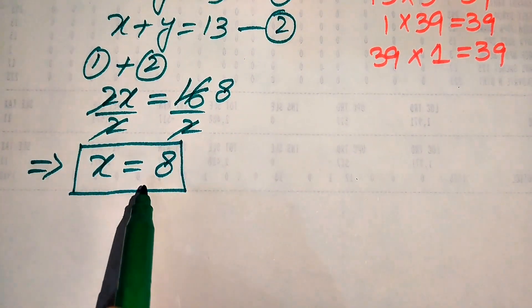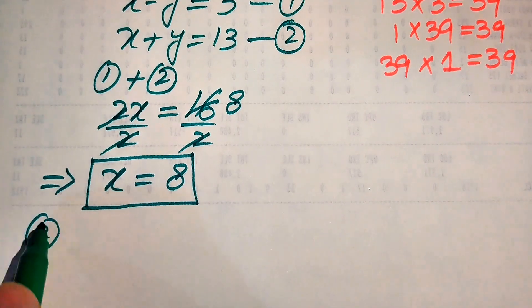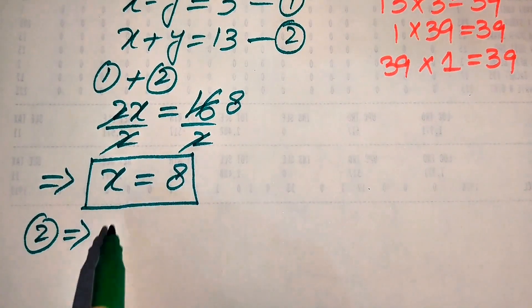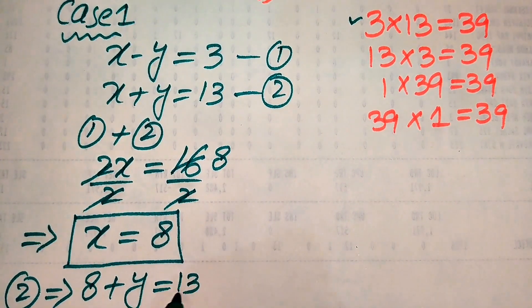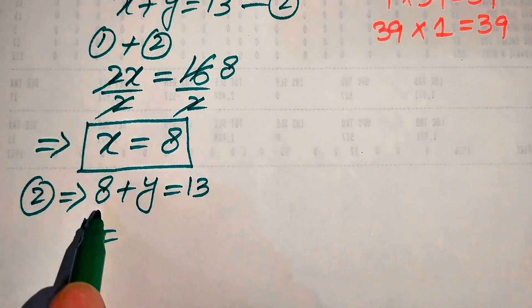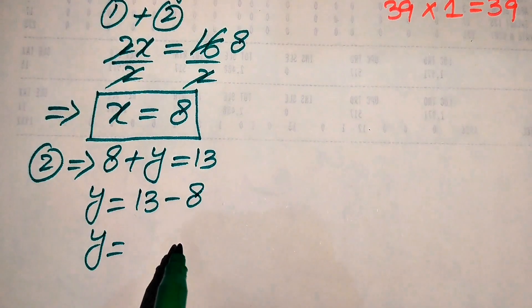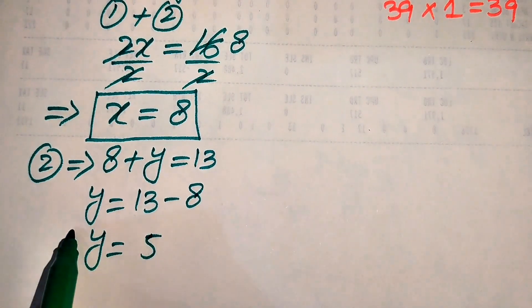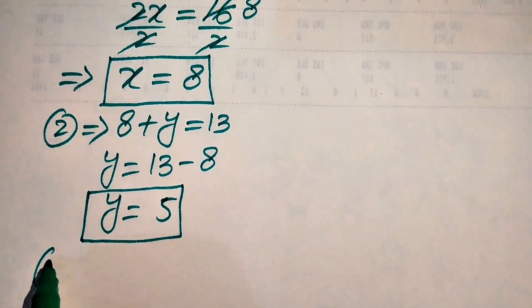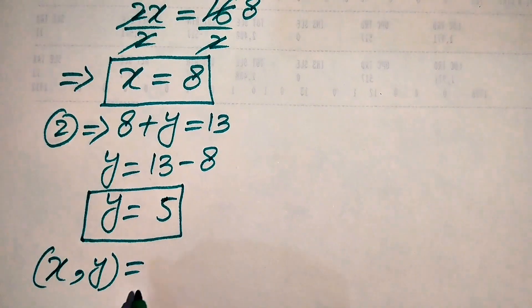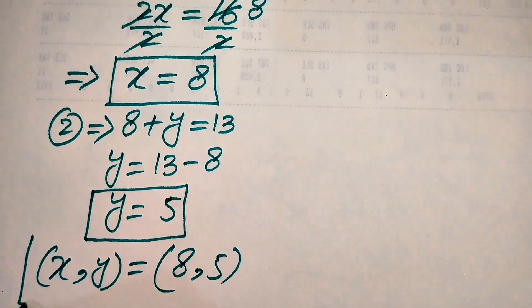Now we find y by substituting x equals 8 into equation 2. This gives 8 plus y equals 13, so y equals 13 minus 8, which gives y equals 5. Both x and y are positive integers, so our first positive integer solution is x = 8, y = 5.